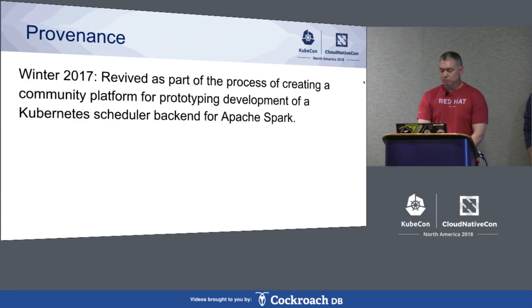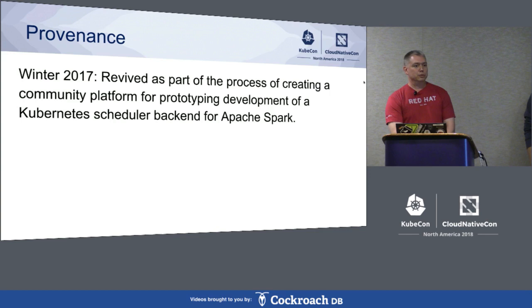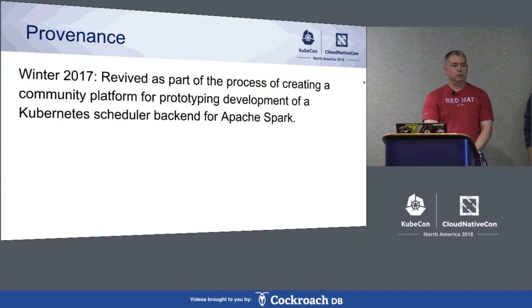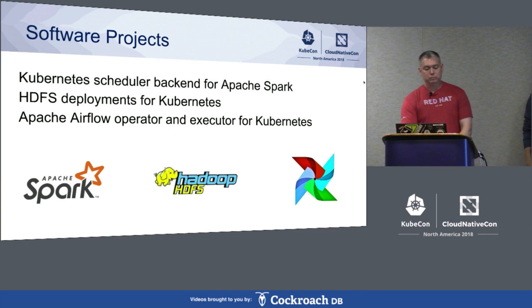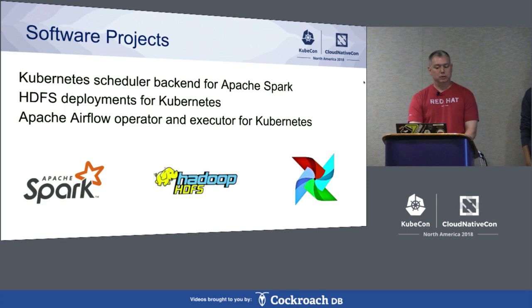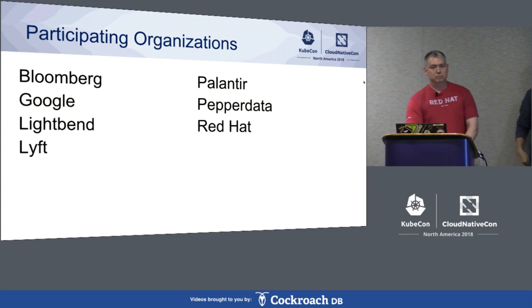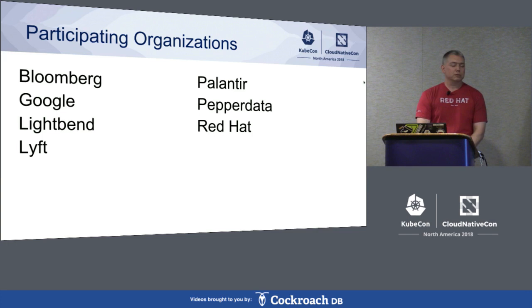So where did the SIG come from? There's a prehistory, but early in 2017 it got revived as part of the process of creating a new community platform for prototyping the Kubernetes scheduler backend on Apache Spark. Since then we've moved the Kube scheduler backend upstream to the Apache Spark community, done some work on HDFS deployments inside Kubernetes, and helped the Apache Airflow community create operators and executors to work with Kube. We've had a pleasingly diverse community involvement — the seven companies shown are my unscientific assessment of who's been most consistently attending.